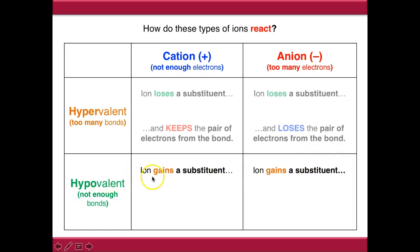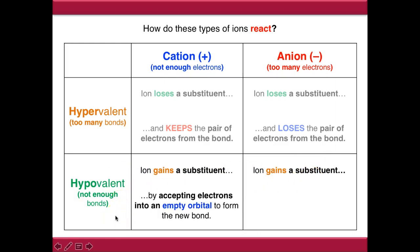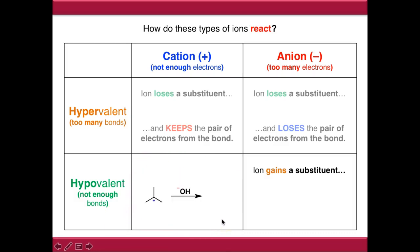In terms of hypovalent reactivity, we need to gain substituents because the ions don't have enough bonds. In the case of the cation, we need to accept electrons into an empty orbital. Here's a classic example: t-butyl cation reacted with hydroxide. We push the electron density from the lone pair on hydroxide into the empty P orbital on the cation, and we end up with t-butanol.